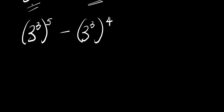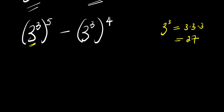Now from here what we are going to do is to find the value of 3 power 3. So 3 power 3 equals 3 times 3 times 3, and this equals 27. So this is 27 to the power of 5 minus 27 to the power of 4.